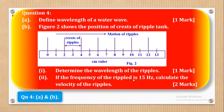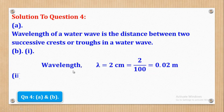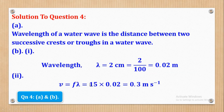Roman 2 says: if the frequency of the ripples is 15 hertz, calculate the velocity of the ripples. We know the frequency and we know the wavelength, so we shall say the velocity is equal to frequency times wavelength. Frequency is 15, wavelength is 0.02. When we apply the formula, we will come up with 0.3 meters per second.